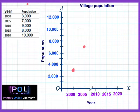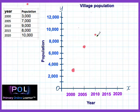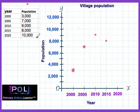Then we go to 2010 — it was now 9,000. 2010, it was 9,000. In 2015, the population went down to 8,000. Then 2020, it was 10,000. So this is 2020.